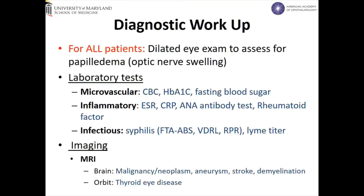Abnormal findings on ESR, CRP, ANA, or rheumatoid factor are more suggestive of inflammatory causes. Testing for syphilis and Lyme disease should also be considered as potential infectious causes. It is recommended to perform an MRI scan of both the brain and orbit. Imaging of the brain is important for ruling out potential morbid or fatal causes of a 6th nerve palsy, including malignancy, aneurysm, stroke, or demyelinating process. Incorporating an orbital scan can help differentiate from alternative causes, such as thyroid eye disease, which can often mimic the presentation of a 6th nerve palsy.